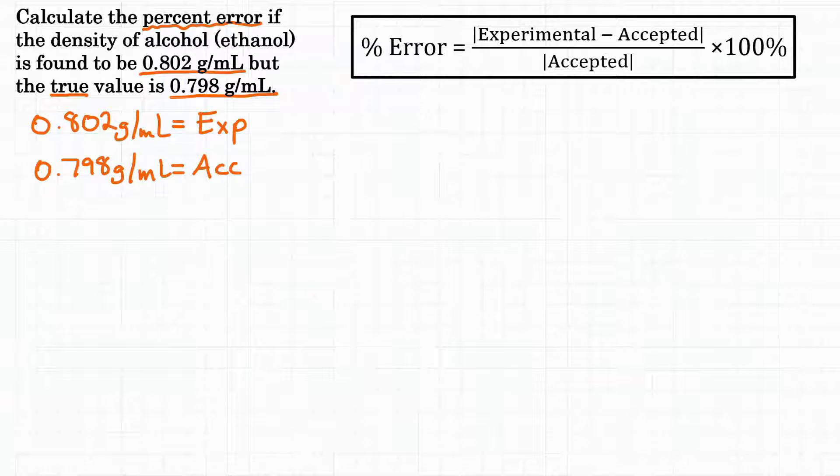You may also hear it called theoretical value or maybe the actual value. Any of those terms are talking about the accepted value or what it actually is. So those are the two values that we need to solve for percent error.